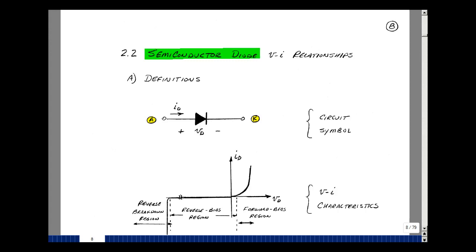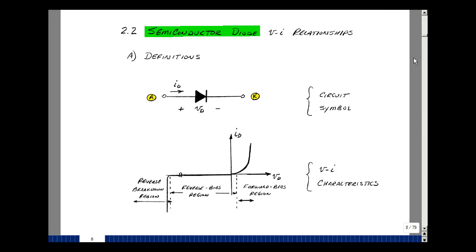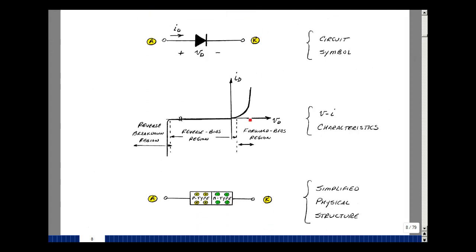Previously, we talked about having an ideal diode. The real diode actually has the same symbol, but we're going to fill in the arrowhead. We're going to define the voltage from anode to cathode and the current flowing from anode to cathode. If you were to plot the voltage versus the current, it would look quite different than the ideal diode. In the first quadrant, it goes up actually exponentially.